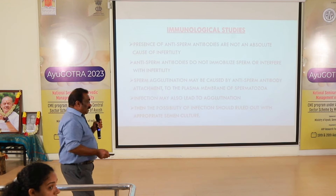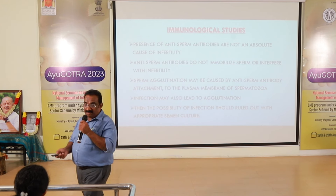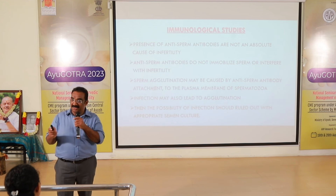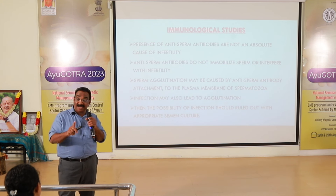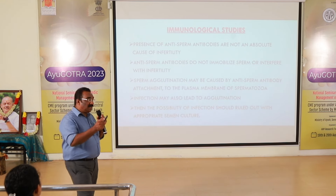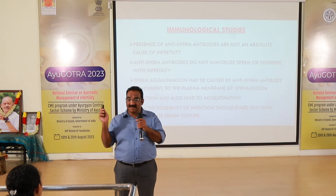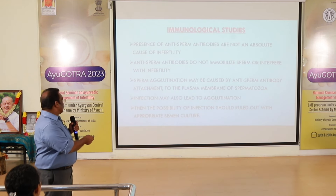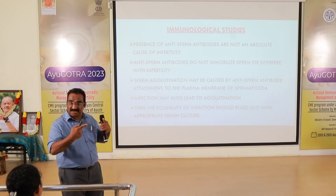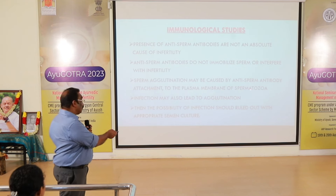Anti-sperm antibodies are generally found in blood circulation, in seminal plasma, as well as on the plasma membrane of the spermatozoa. Agglutination patterns such as head-to-head or tail-to-tail are seen due to the presence of anti-sperm antibodies on the plasma membrane of spermatozoa.